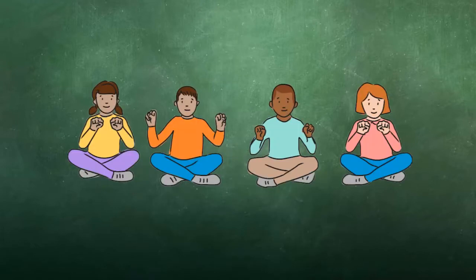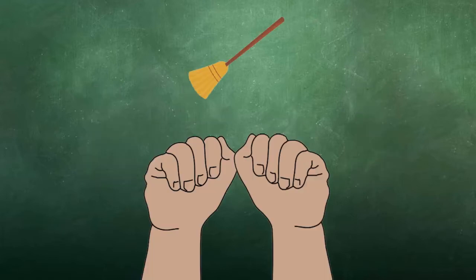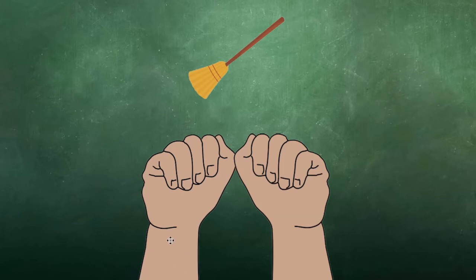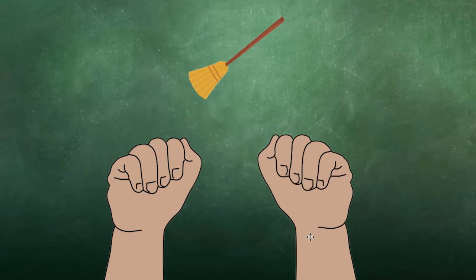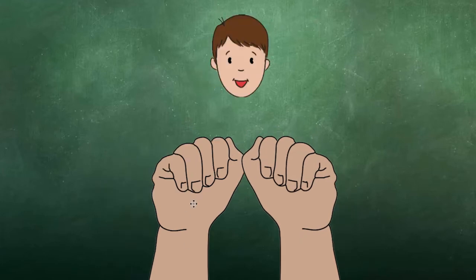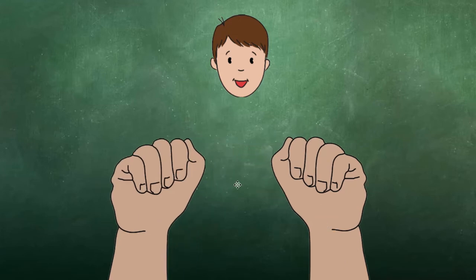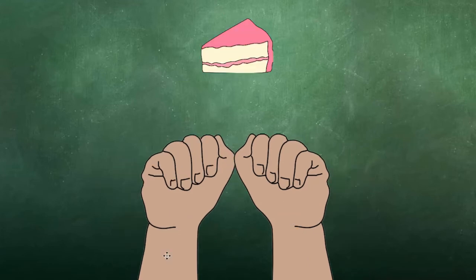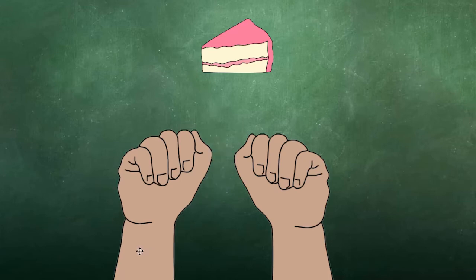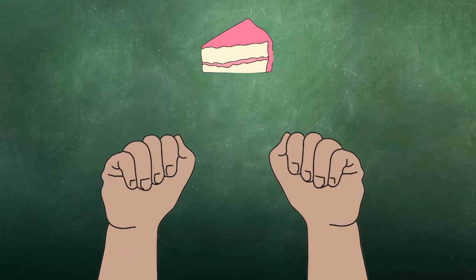The next step would be to practice them the opposite way, giving students the word and having them separate the onset and rhyme. Say broom — break it apart: /br/... /oom/. Say boy — break it apart: /b/... /oy/. Say cake — break it apart: /k/... /ake/.